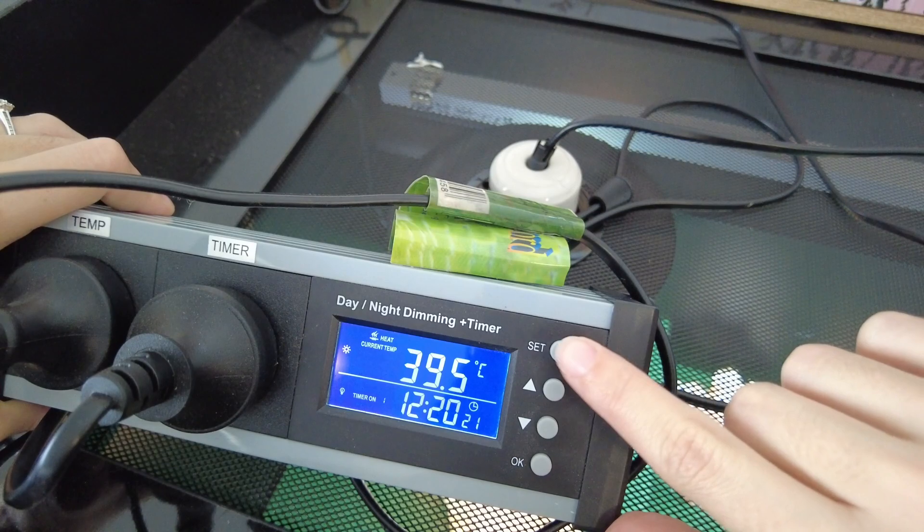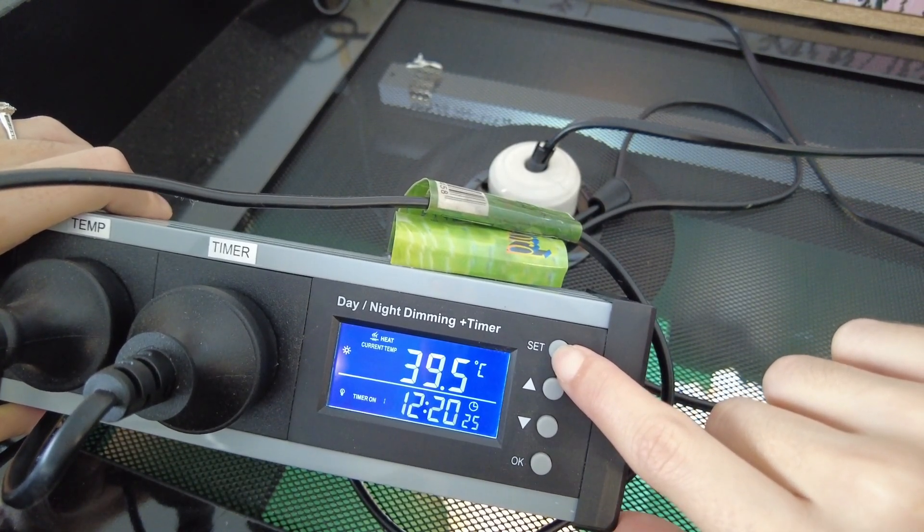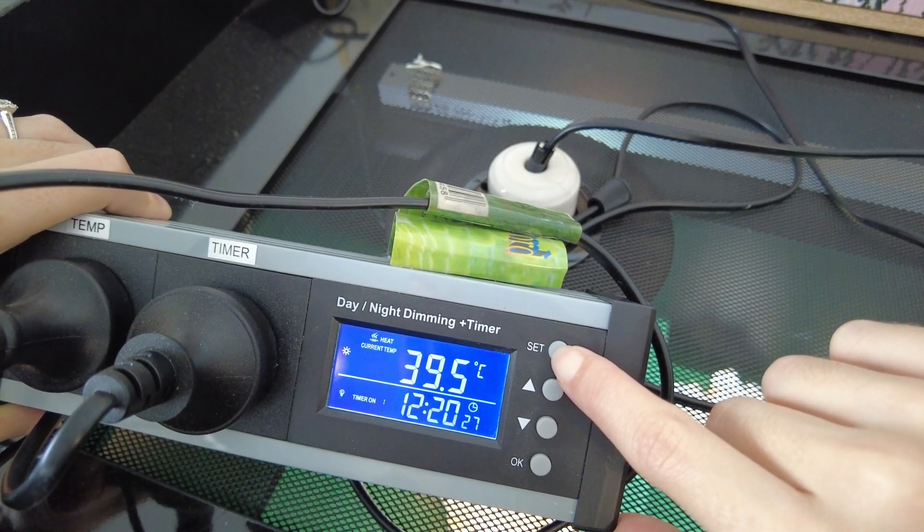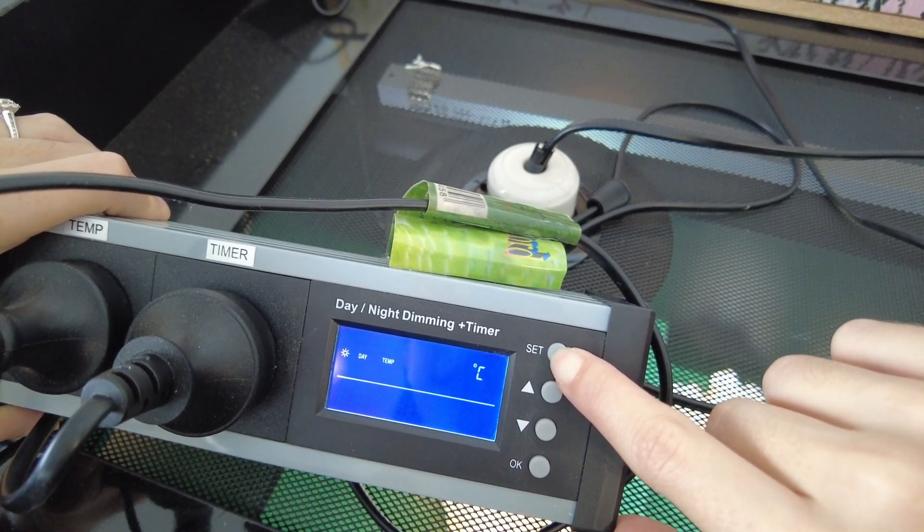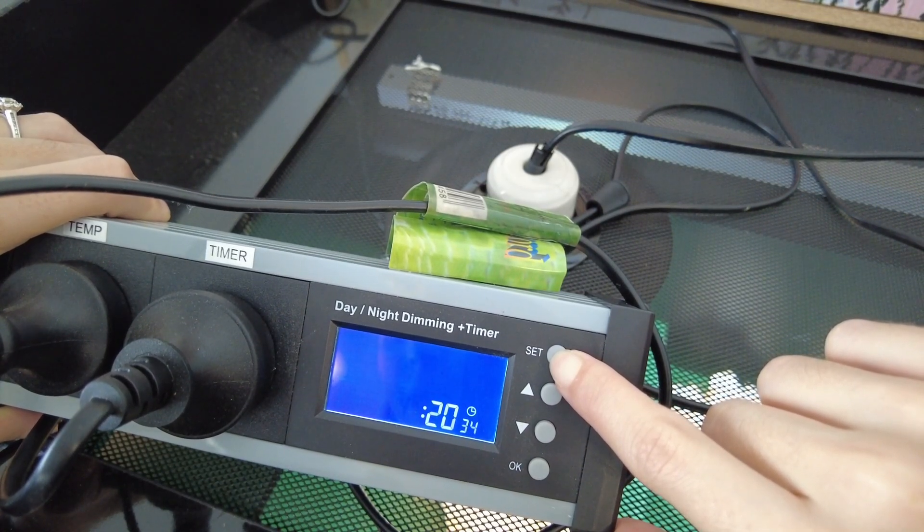To edit the settings on this we hold down set and it's first going to come up with the temperature settings like that. And if we keep holding it down it's going to take us to the timer settings just like that.